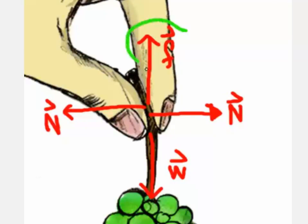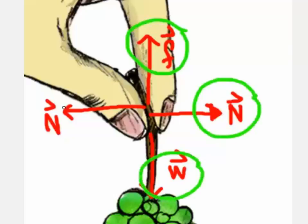So let's go over our free body diagram again. We have the friction, we have the two normal forces exerted sideways, and we have the weight of the grapes. Notice that our forces are all balanced, so there is no acceleration unless you decide to drop the stem.